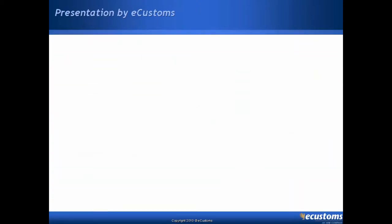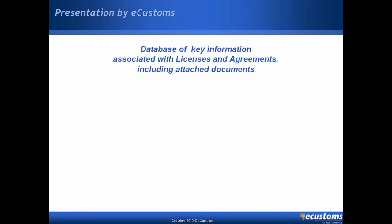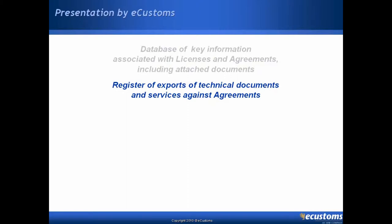Visual Compliance Activity Manager has a number of key features. The application is a database of key pieces of information as well as documents associated with both licenses and agreements. The system also includes the ability to record all activity that occurs against agreements, the export of technical data and services, as well as the export of physical hardware against licenses.